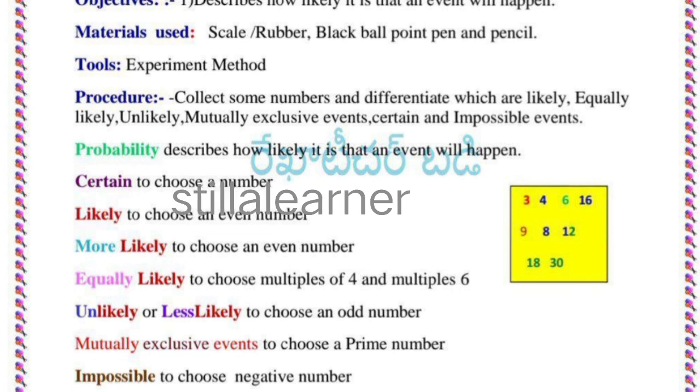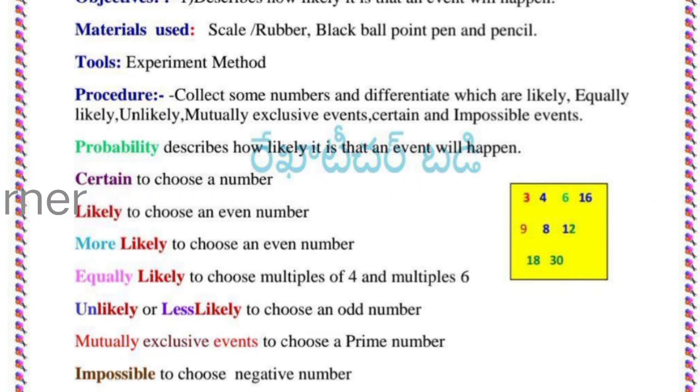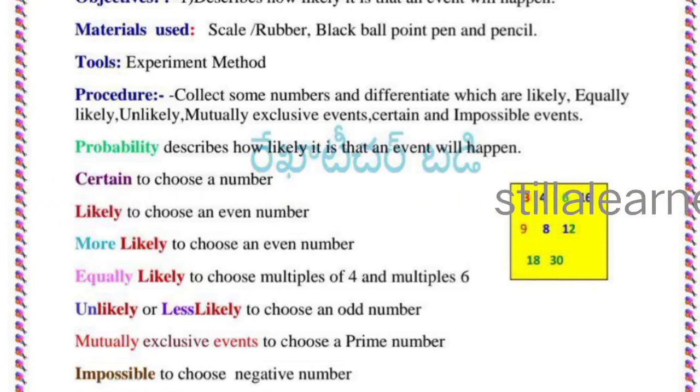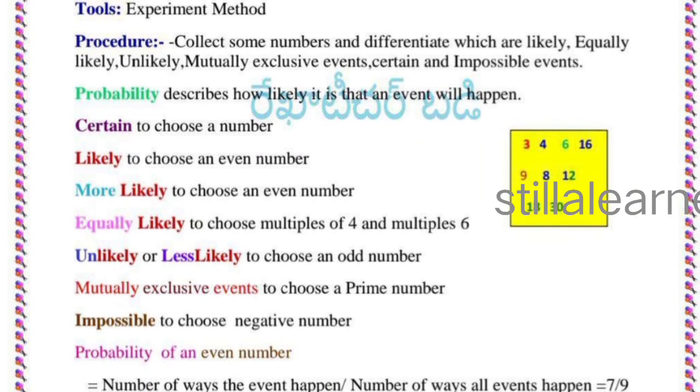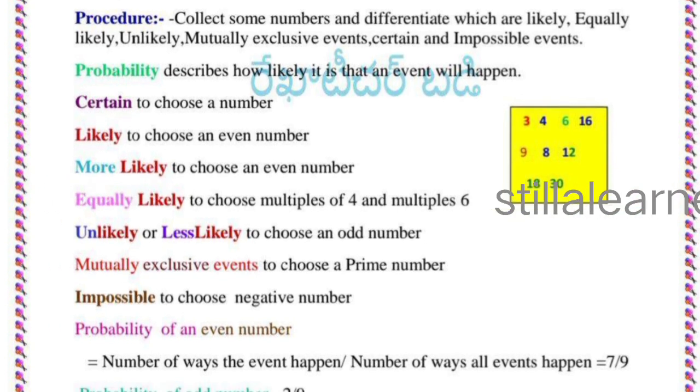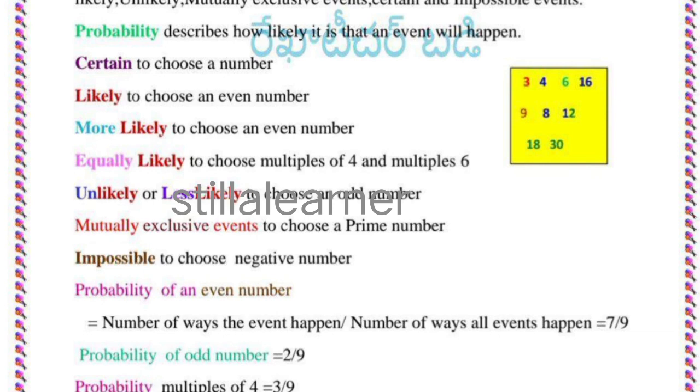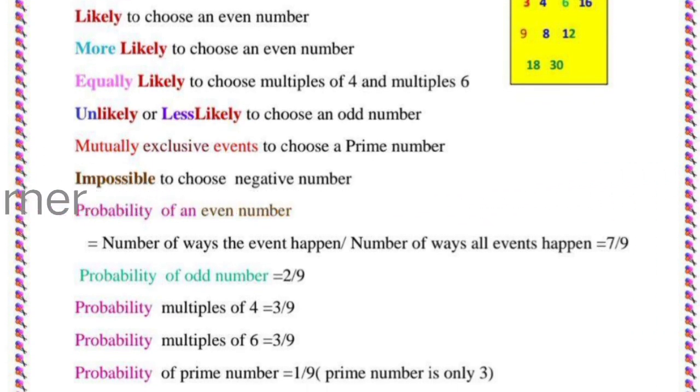Then: certain to choose a number, likely to choose an even number, more likely to choose an even number, equally likely to choose multiples of 4 and multiples of 6, unlikely or less likely to choose an odd number, mutually exclusive events to choose a prime number, impossible to choose a negative number.